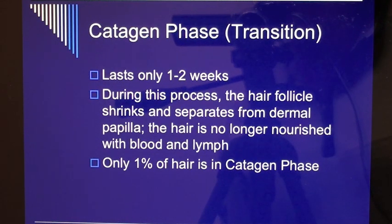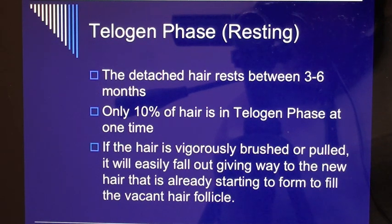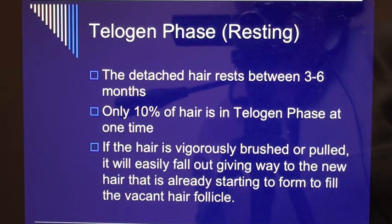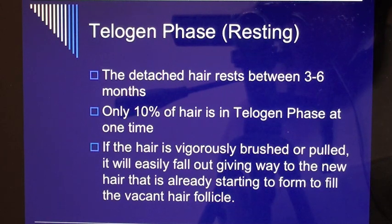Only one percent of hair is in the catagen phase. During the telogen resting phase, the detached hair rests for three to six months. Only ten percent of hair is in the telogen phase at one time. If hair is vigorously brushed or pulled, it will easily fall out, giving way to new hair already starting to form in the vacant hair follicle.